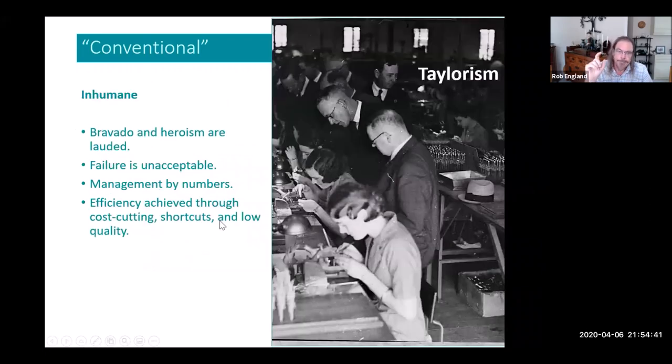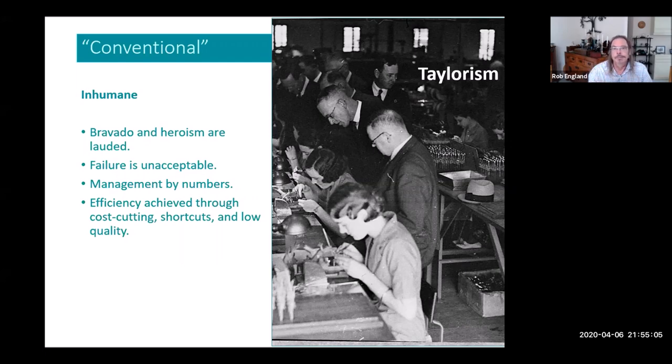I mean what's called Taylorism, scientific management that came in at the start of the 20th century, right? Inhumane management. The idea that we are human resources, we are machines that need to be standardized and made plug compatible, that we are round pegs that will be fit into square rolls, that failure is unacceptable, that bravado and heroism are what defines a good employee, that you can manage people by numbers, you can measure humans and decide whether they're good humans or not, and that efficiency is achieved by cost cutting shortcuts and low quality. Some or all of these attributes are characteristics of inhumane management.